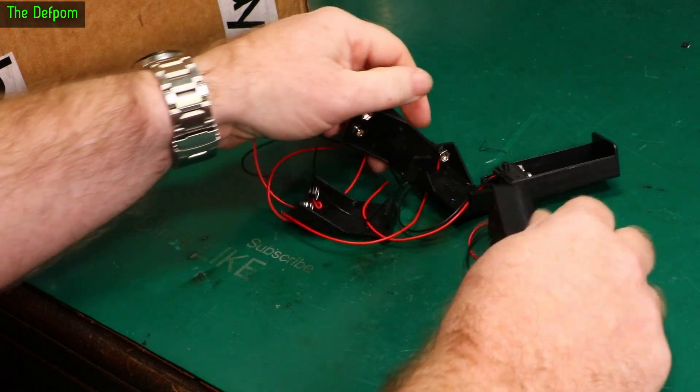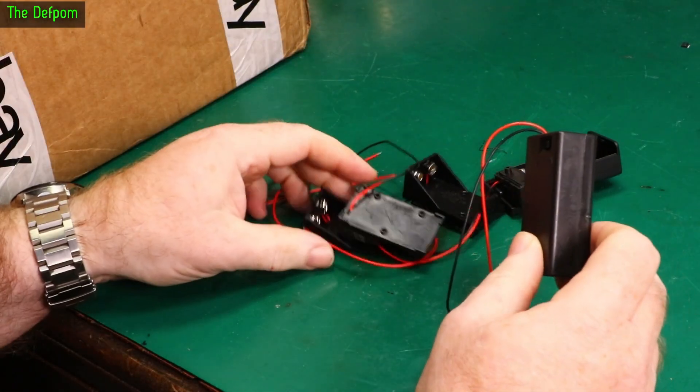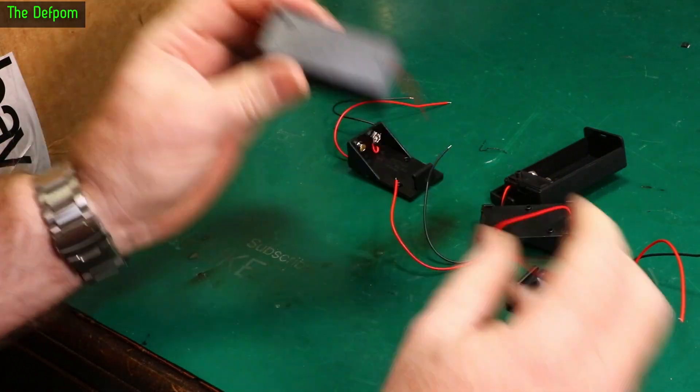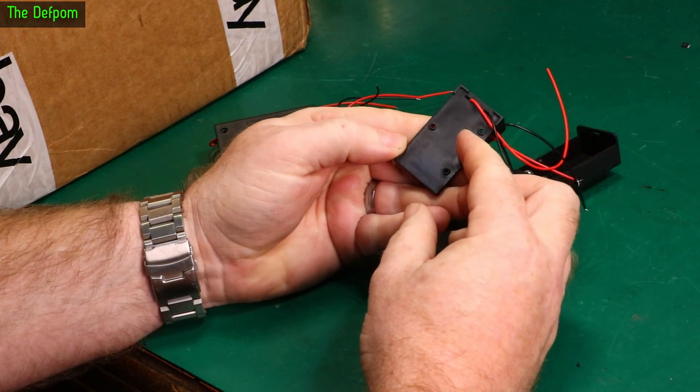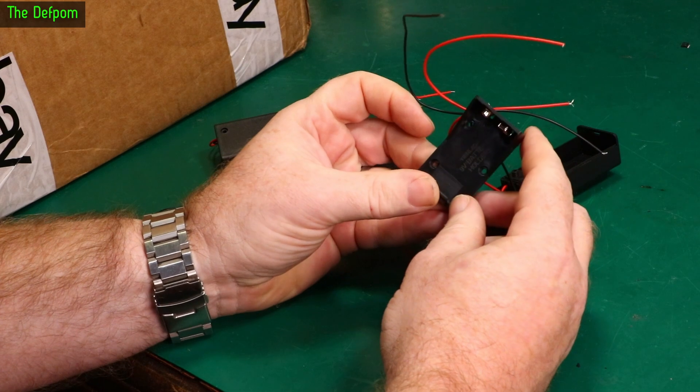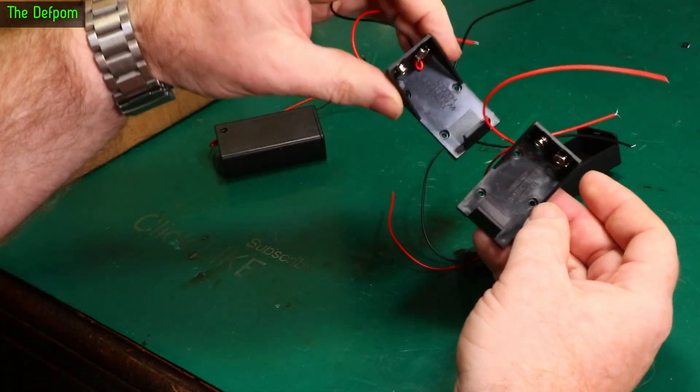Right, so there'll be links down below for various items as well, including these things. These are some battery holders. So these are some 9-volt battery holders which you can screw onto something. Screw mount them, like clip-on holders.